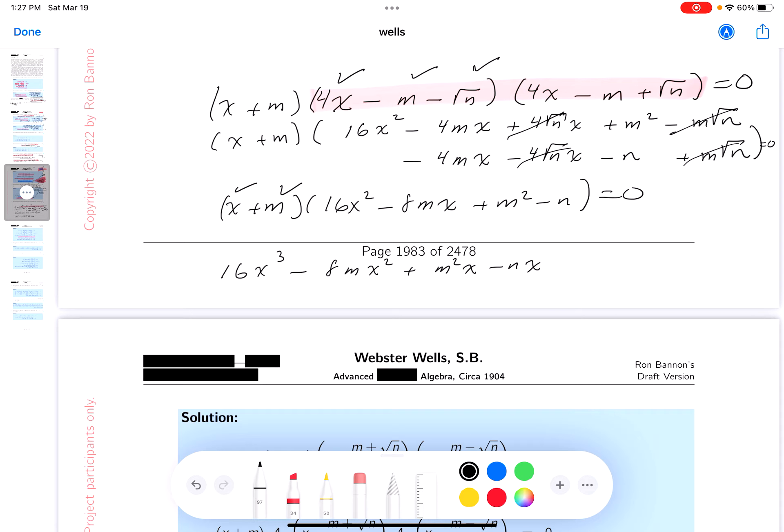Now let's do the m. What do you get? Plus 16m x squared. Minus 8m squared x. Plus m cubed. Minus nm. This is equal to 0.